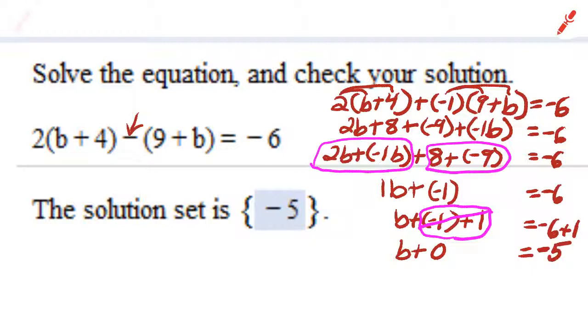Okay, so coming back to the left side, what is b plus 0? It's just b. So the answer is b equals negative 5, which is precisely what the problem says. Okay, talk to you later.